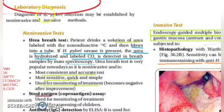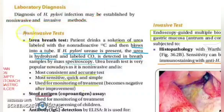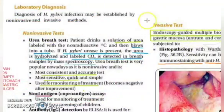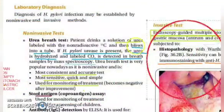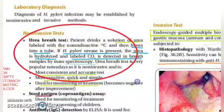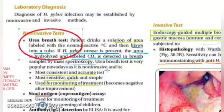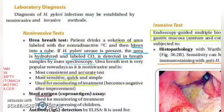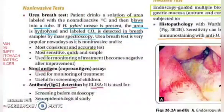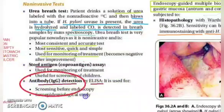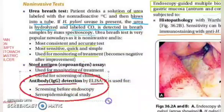Let us focus on the lab diagnosis of H. pylori infection. There can be two ways of doing it: non-invasive or invasive. You will always first try the non-invasive. Non-invasive options include the urea breath test and stool antigen and antibody detection.